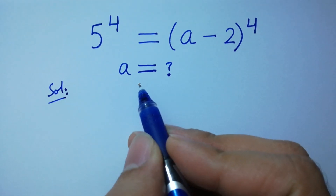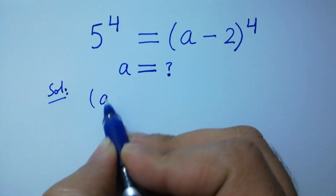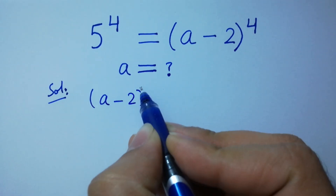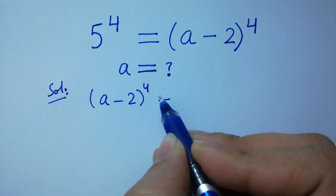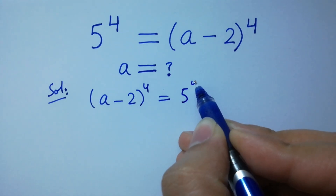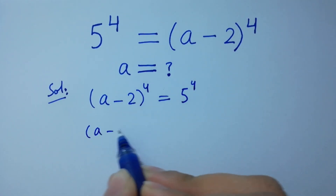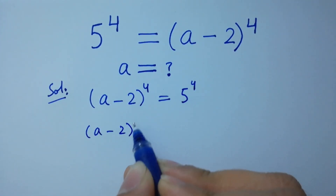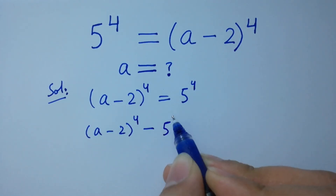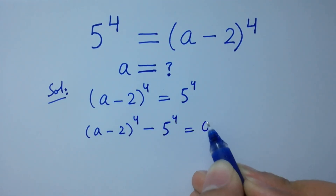This is the same as (a minus 2) to the power 4 equal to 5 to the power 4. So (a minus 2) to the power 4 minus 5 to the power 4 equals 0.